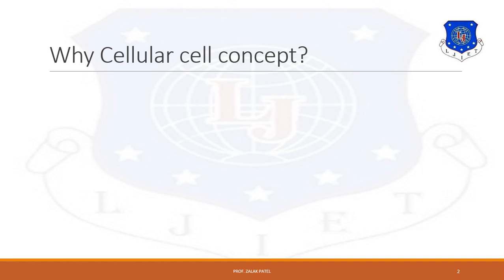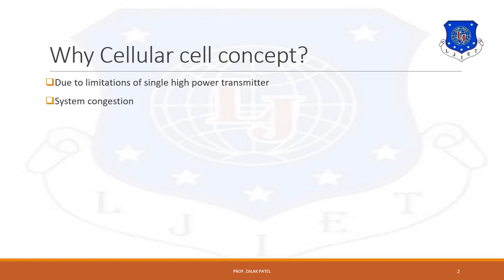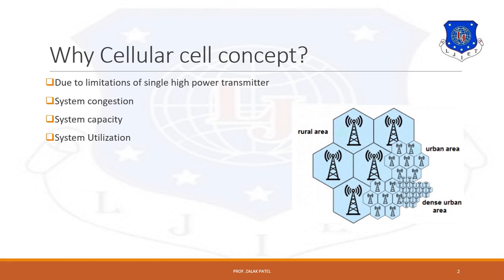First of all, why is the cellular concept important? Because in the older days, a single high-power transmitter with antenna was generally used. Due to the limitation of a single high-power transmitter, the cellular concept was introduced. A single high-power transmitter introduced system congestion, which produced spectral congestion and user capacity was a major concern. The demand for mobile services introduced the cellular concept to better utilize system resources. The whole area is divided into a number of cells — individual towers for rural areas as well as for urban areas.